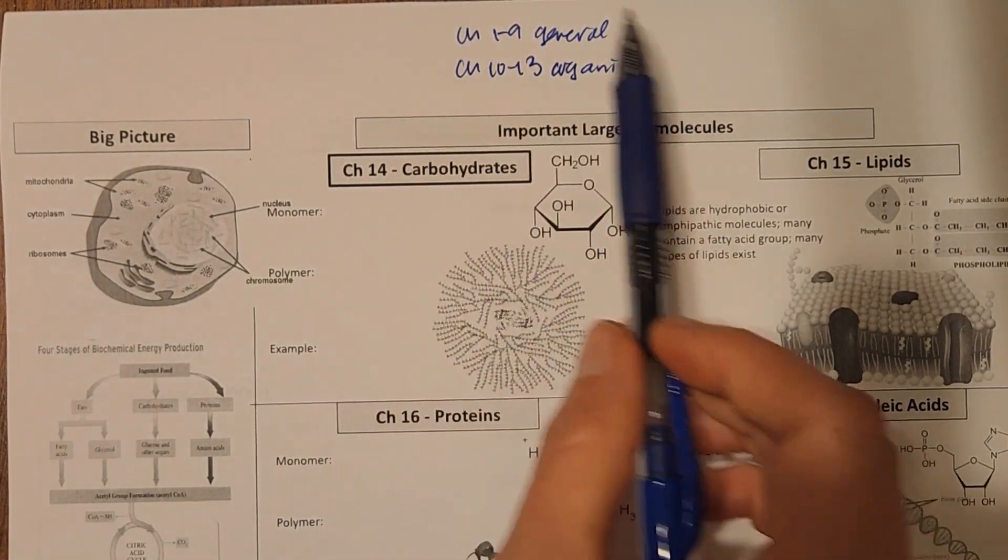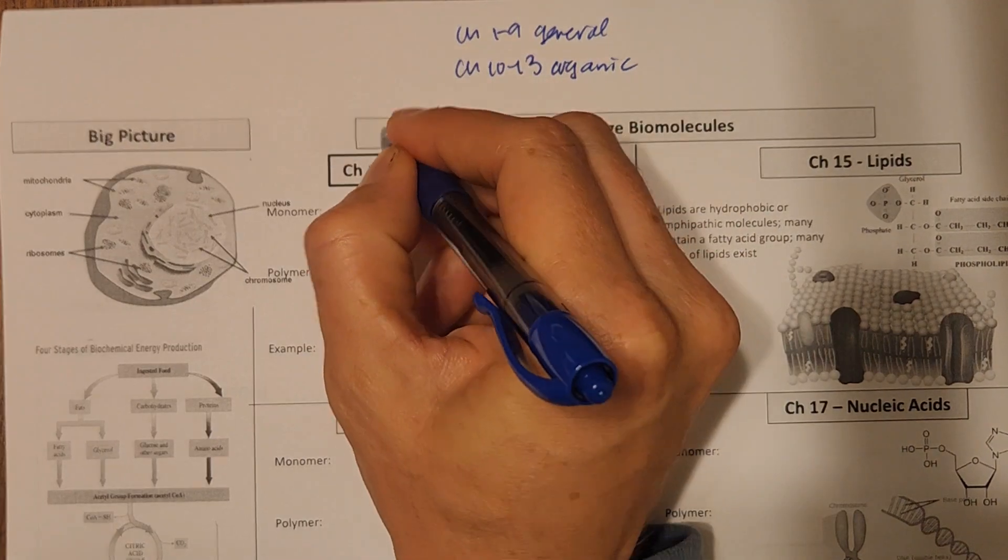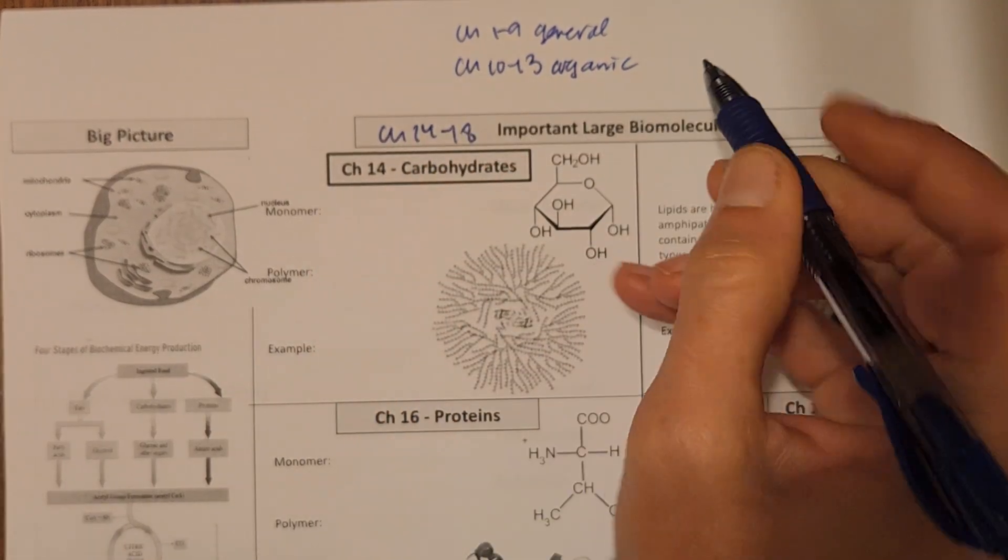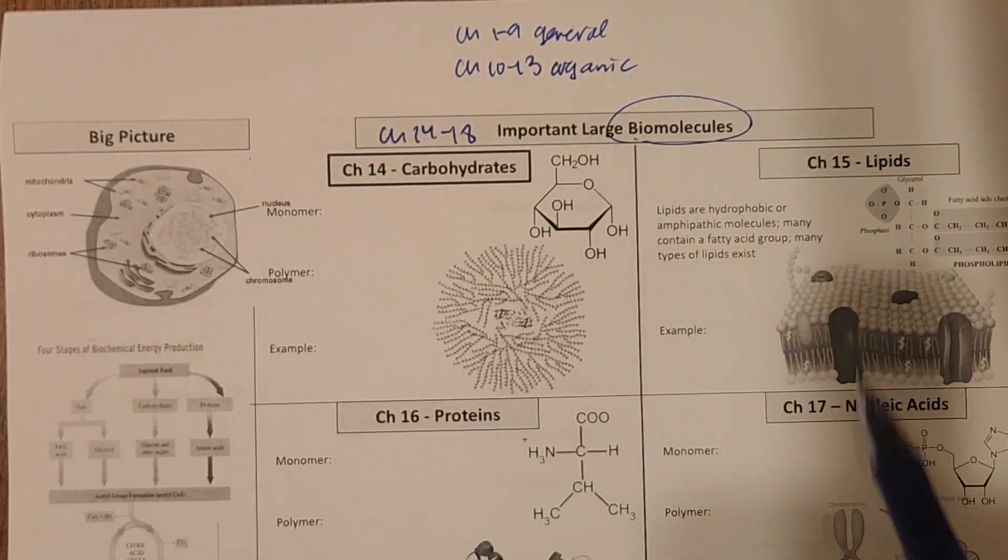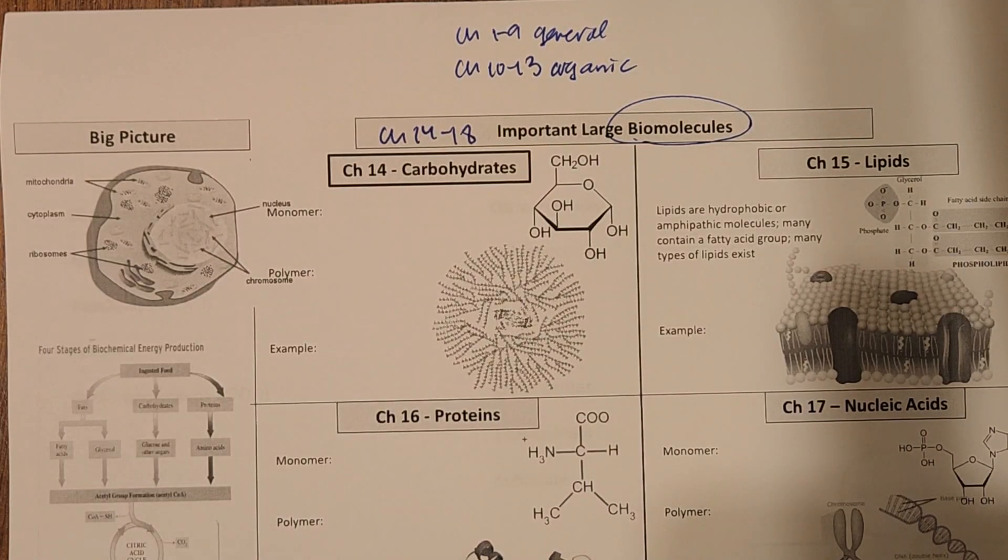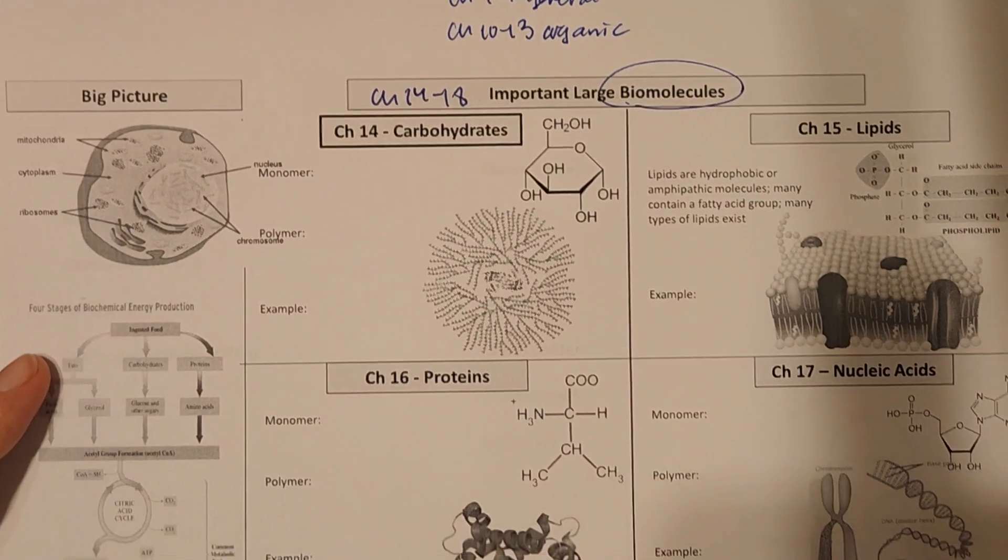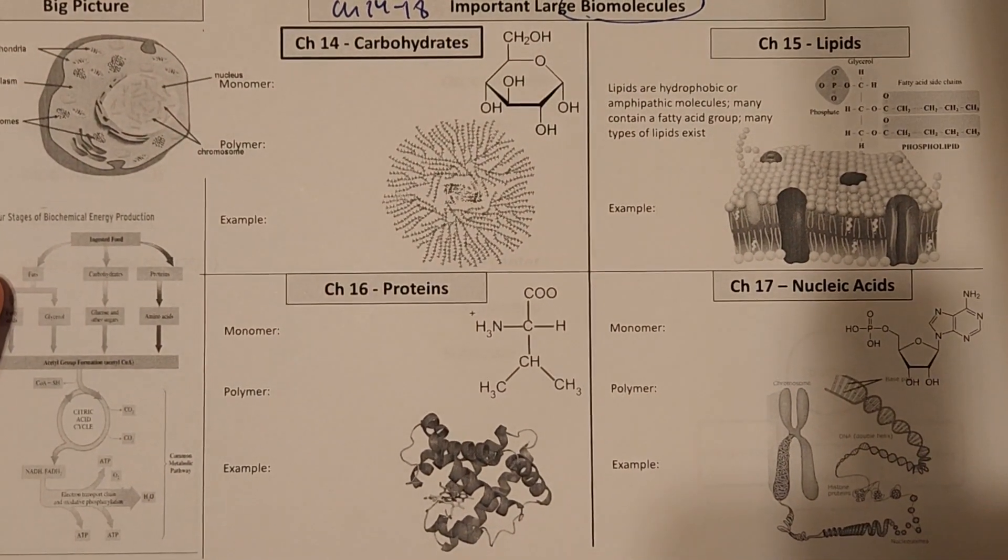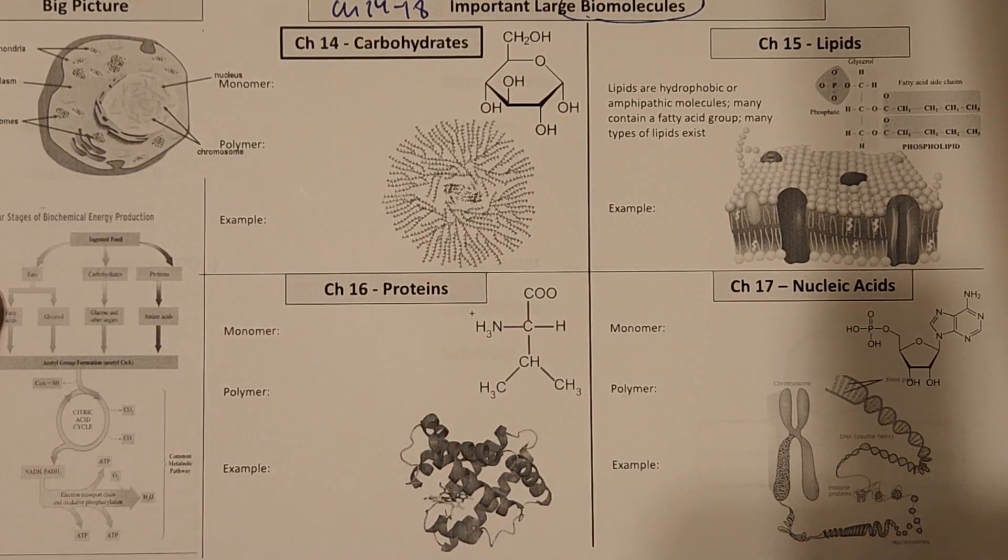And now we're going to use those two things and put them together in chapters 14 through 18 to talk about biomolecules or biological chemistry. So it's exciting because we get to apply all the things we've been learning into some larger molecules. It's also maybe a bit daunting because the molecules are large, as you can see here.